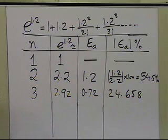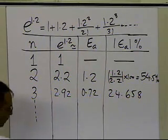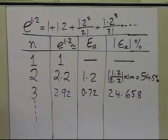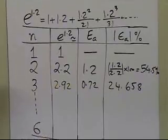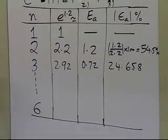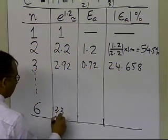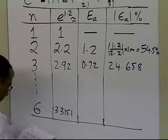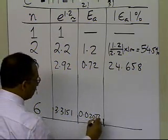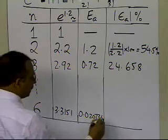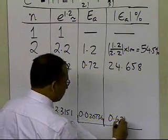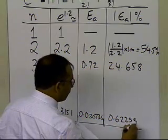As I keep on increasing the number of terms, it might be a good idea for you to fill this table up at home as homework. I'm going to show you what I get for n equals 6 so you can check your work. I'm getting 3.3151, the approximate error is 0.020736, and the relative approximate error is 0.6255 percent.